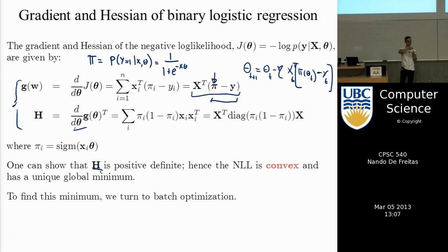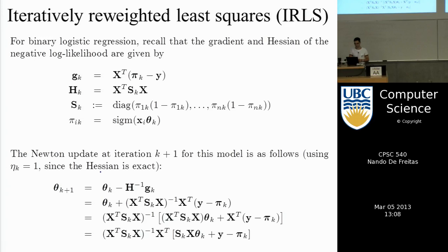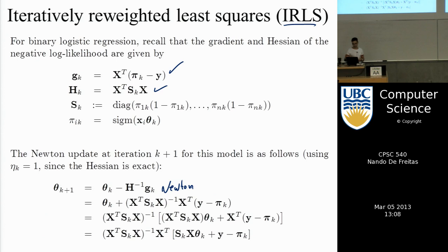Newton's method only required one step in linear regression. Here it will require several steps because the function is not exactly quadratic. The Newton method for logistic regression has a special name: the IRLS algorithm — iteratively reweighted least squares. Once you have the gradient and Hessian, Newton's method is theta minus the inverse of the Hessian times the gradient.